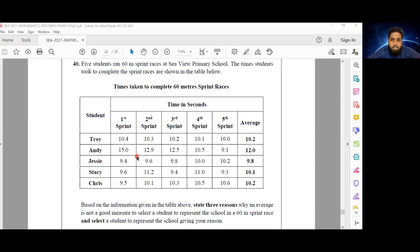Whereas somebody like Chris, with the very same average as Troy of 10.2, his times are getting longer.